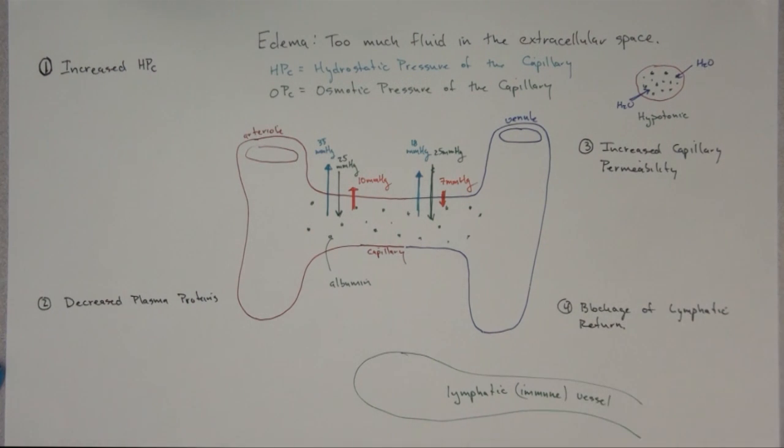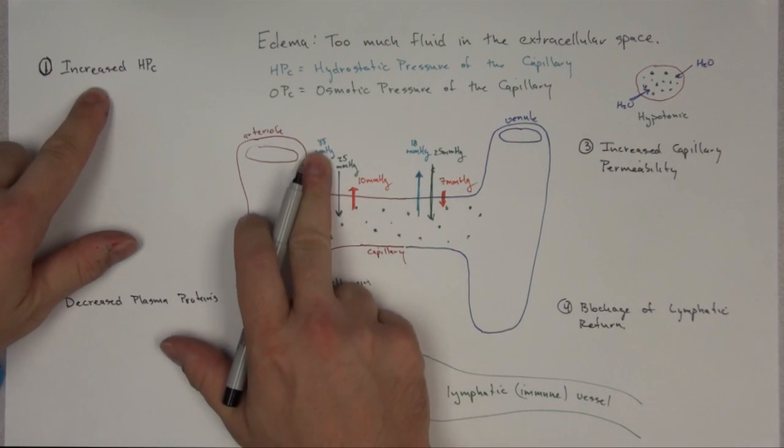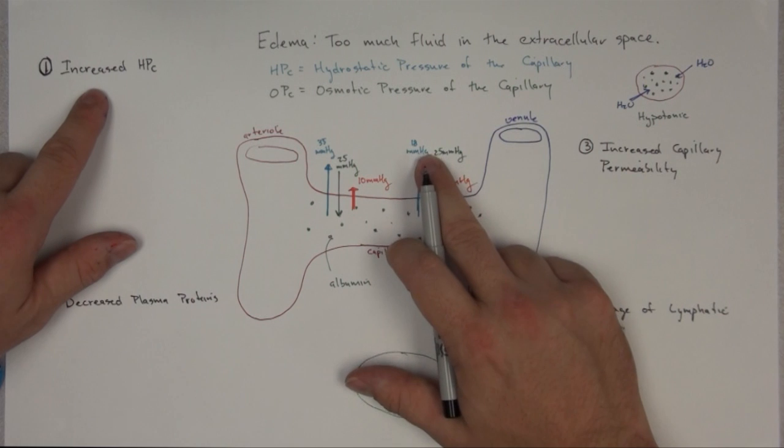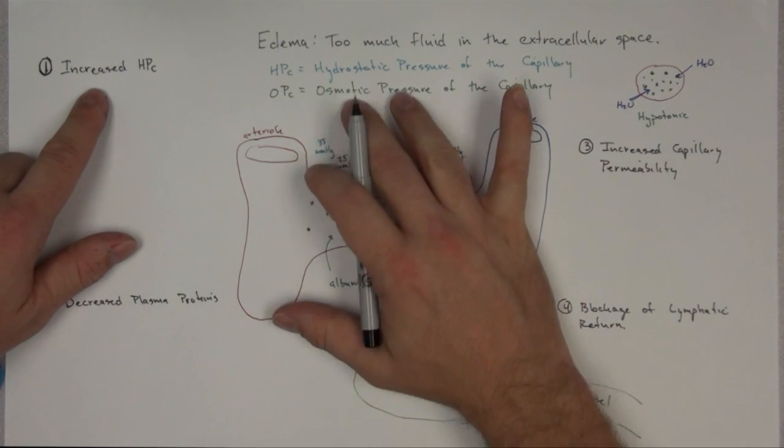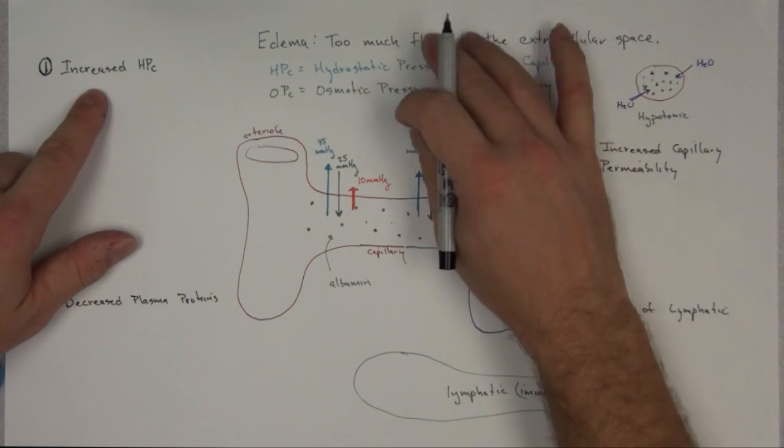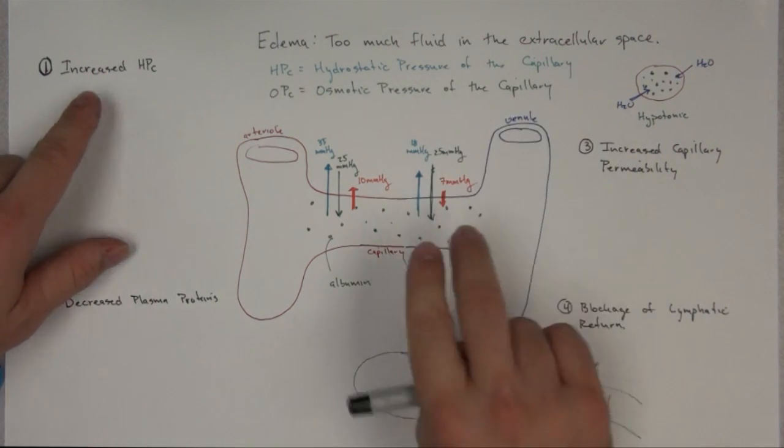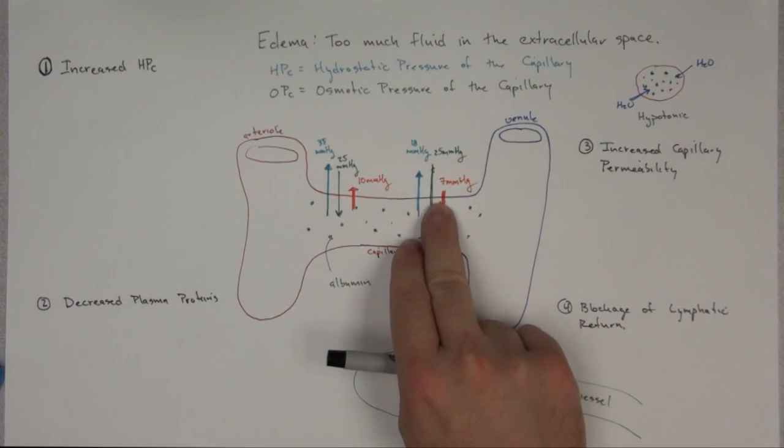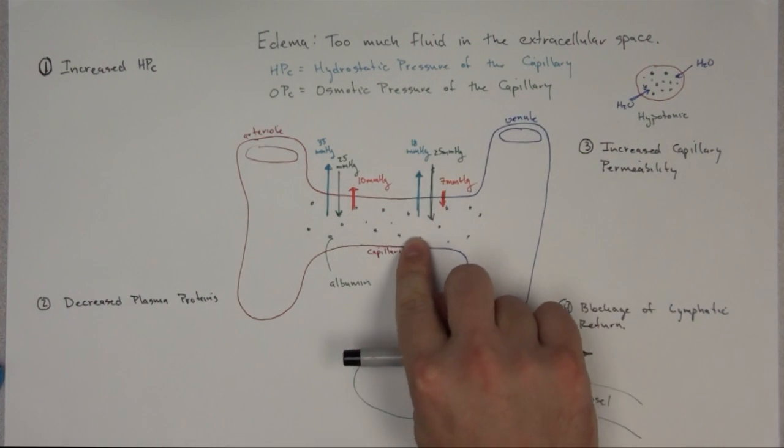Let's go through this one more time and then we'll get some more details on how that can happen. Increase HPC, if we increase this 35 higher, we're going to push out at a higher pressure. We might even push out at a higher pressure over here. So now we win more at pushing out. We push out more, we still have to draw back in the same. So now we end up with more fluid out here. If there's not enough albumin out here, that's going to decrease this osmotic pressure of the capillary, and that means we're going to be less able to pull the fluid back in.